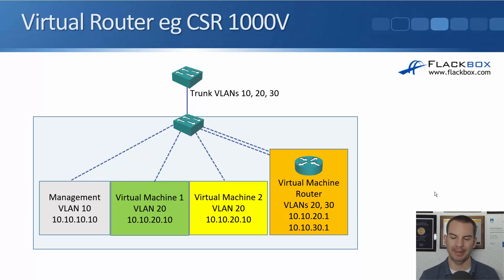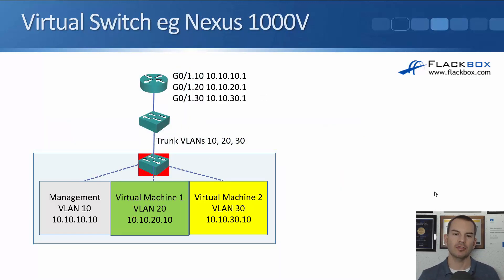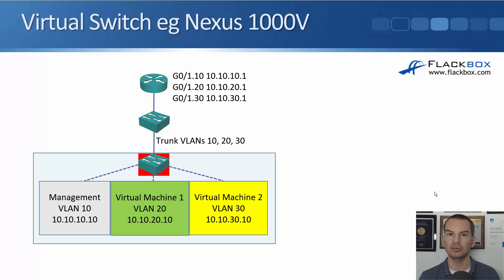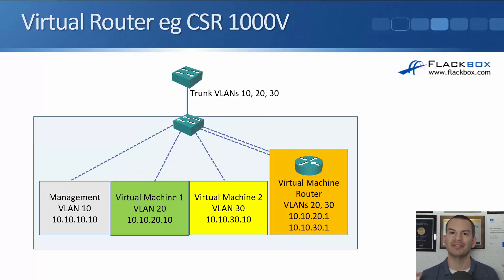This works fine in your own data center. But if these virtual machines are running in a cloud environment and you want your own router to control routing between them, you can't place a physical router in the cloud provider's facility. Instead, you can use a virtual router — a router that runs as a virtual machine itself.